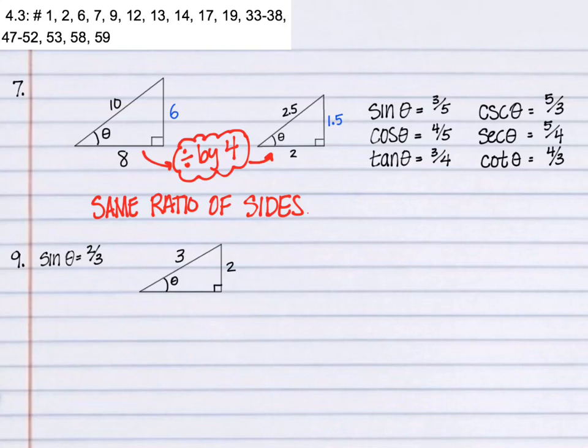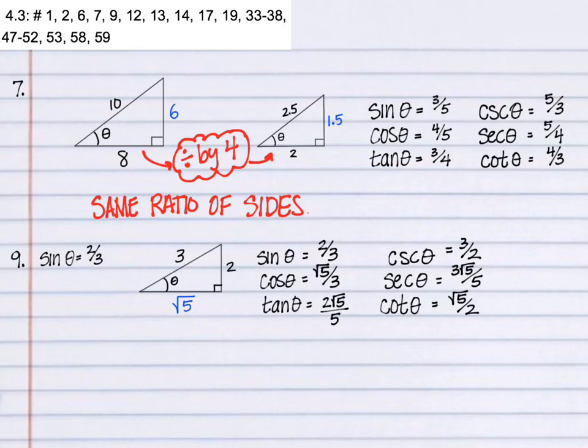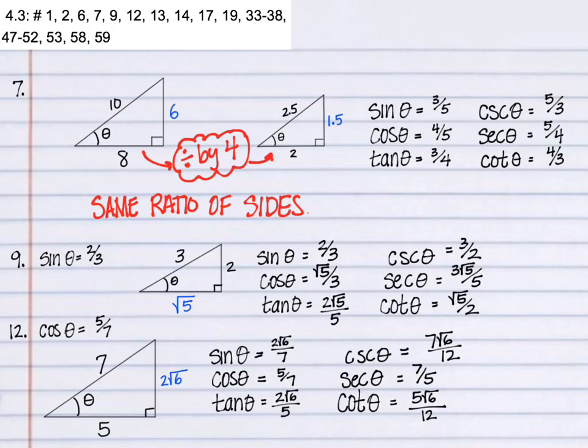If the sine is two-thirds, then we have the opposite over the hypotenuse. We can figure out the third side and get all six trigonometric functions. With cosine, we have the adjacent over the hypotenuse. Find the third side and we have all six trigonometric functions.